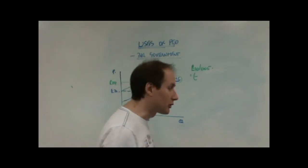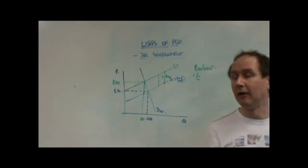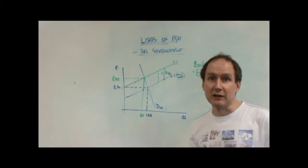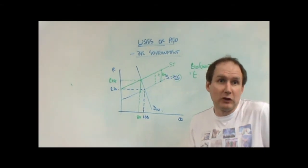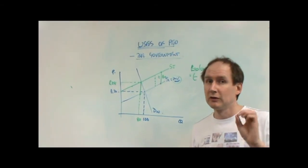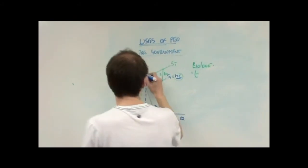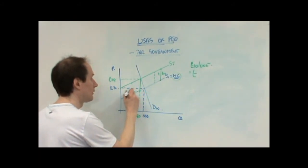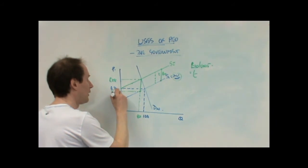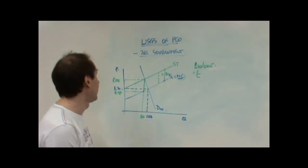So, the firm has managed to push price up to 28 pounds. It still has to pay 10 pounds to the government. The government couldn't care whether the firm has passed it on to the consumer or not. So, the firm receives 28 pounds from the consumer. It then has to give 10 pounds to the government. Leaving the firm with 18 pounds per unit itself.